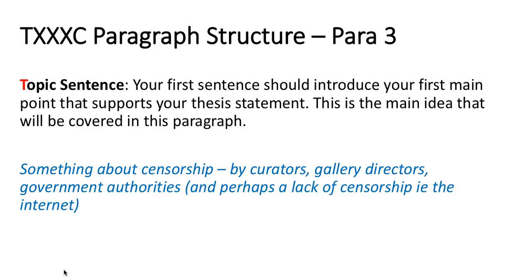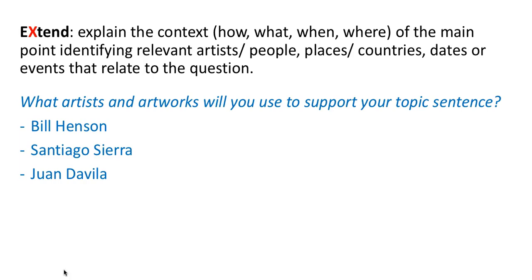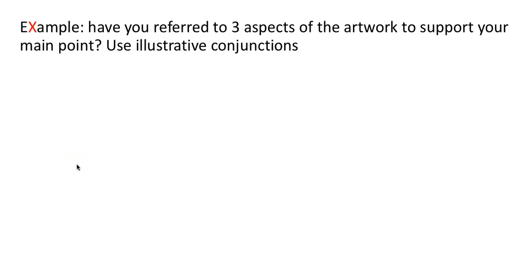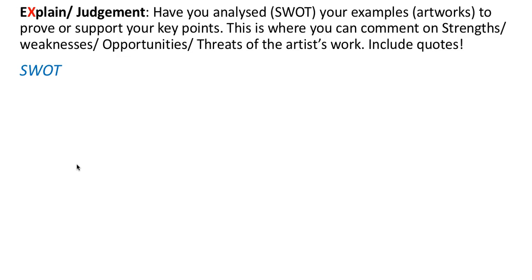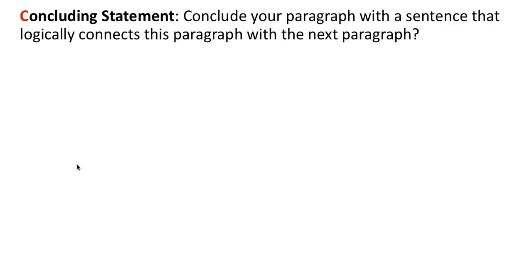For our third paragraph, your topic sentence should address something about censorship by curators, gallery directors, government authorities, and the audience — and there's also the issue of a lack of censorship on the internet. Some artists you could use in the extend part of your paragraph are Bill Henson and Santiago Sierra. Then your example should cover three aspects of the artwork to support your main point, followed by a SWOT and your concluding statement.